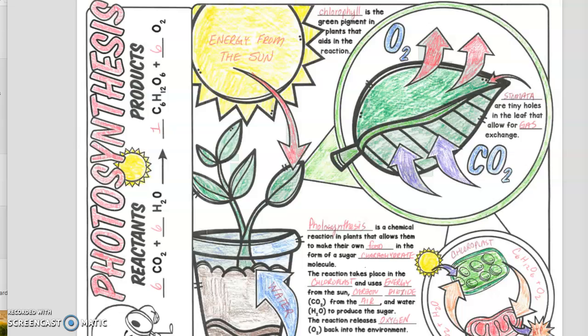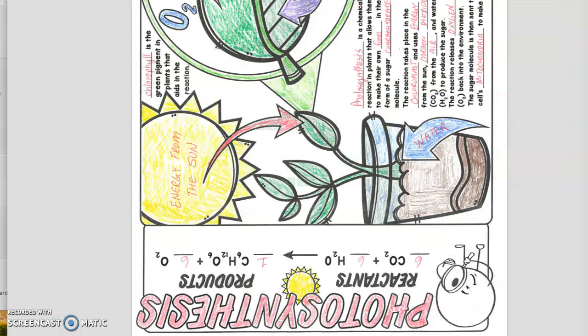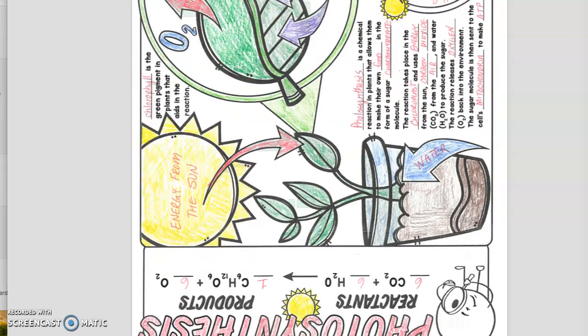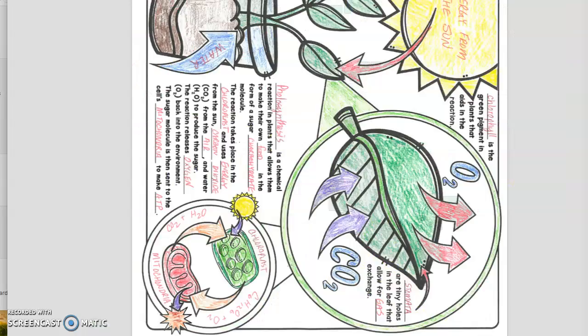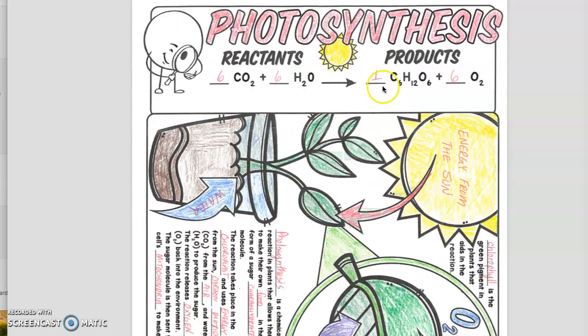Anyways, we're going to start with this first section up here at the top, let's rotate that. That first section is the formula for photosynthesis.